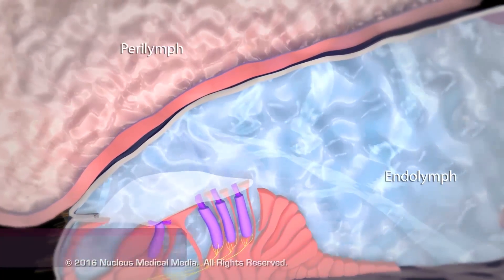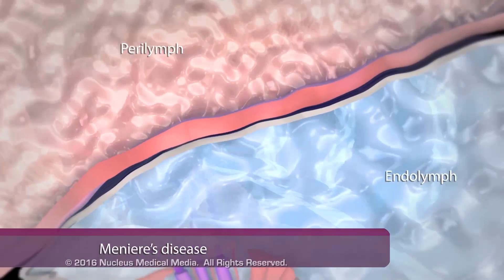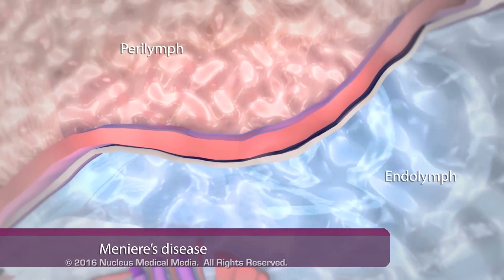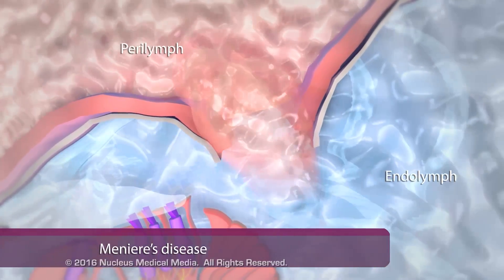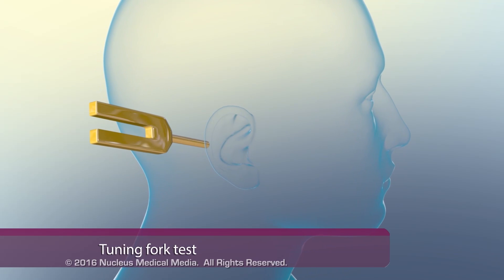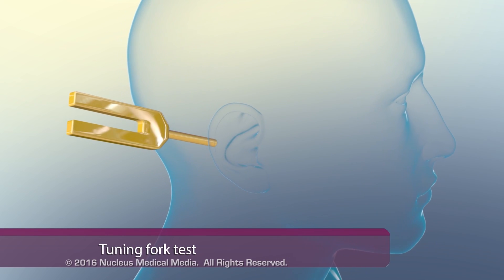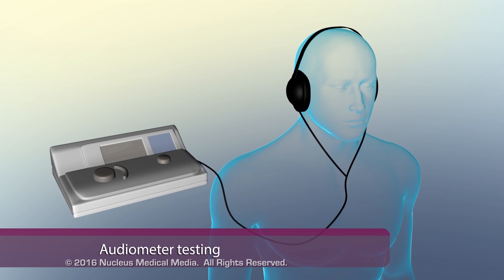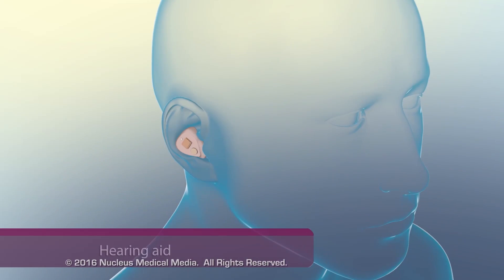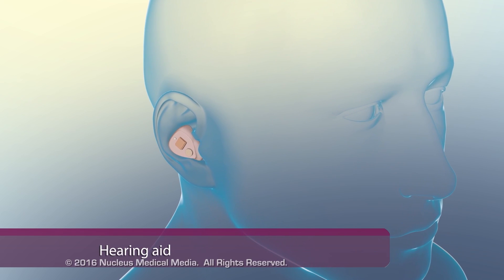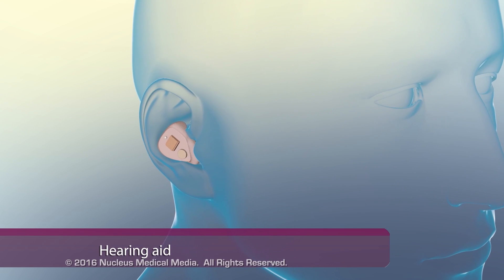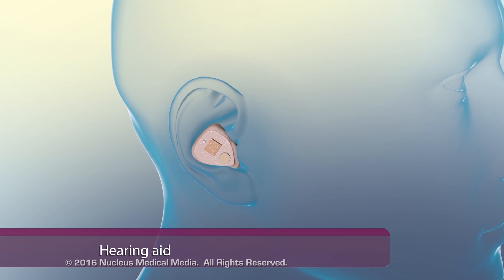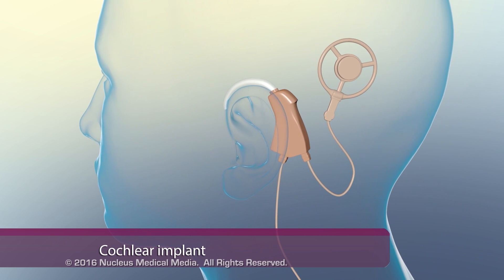Another common cause of hearing loss is Meniere's disease, in which a buildup of perilymph fluid, left untreated, can result in a rupture of the membranous labyrinth. Diagnostic tests include tuning fork tests and audiometer testing. Depending on the cause and severity of auditory nerve damage, sensorineural hearing loss is treated with devices such as hearing aids or cochlear implants.